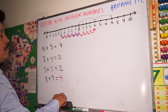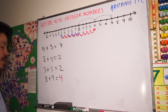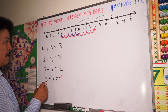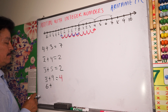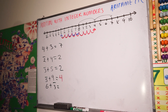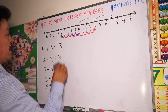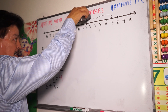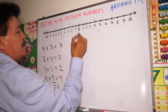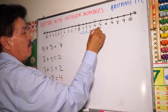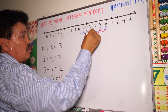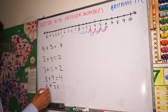Let's do another problem: six plus minus three. Six plus minus three. Use the number line. Go to six — one, two, three, four, five, six — right here. Now go to the left, minus three — one, two, three. How much is it? It equals three.